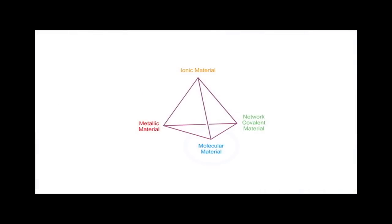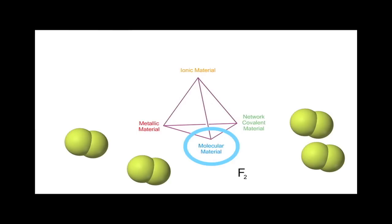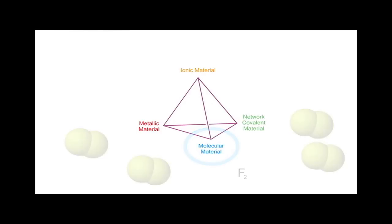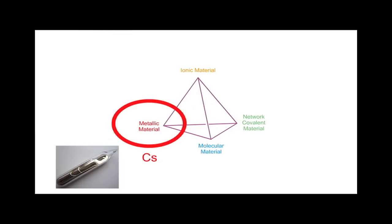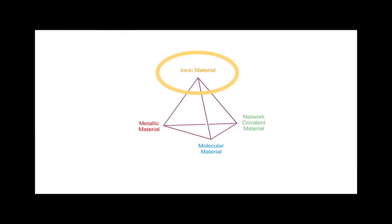Right, the four corners of the tetrahedron. There's no particular problem with the molecular corner, fluorine, as fluorine F2 is a clear molecular material, and it's the most electronegative element. There's no particular problem with caesium. Caesium is clearly metallic and is the most electropositive element, and there's no particular problem with the ionic corner, caesium fluoride.